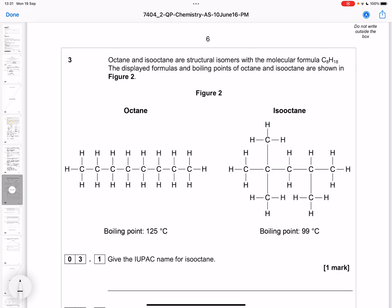We've been asked to give the IUPAC name for isooctane. We need to find the longest carbon chain that contains the functional group. In this case it's an alkane so we haven't got a functional group. We need to find the longest carbon chain and count down the chain.